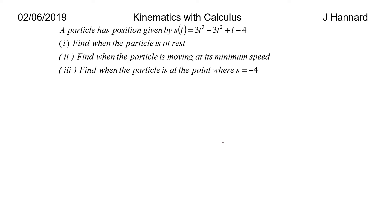Let's do another one then. A particle has a position given by s(t) = 3t³ - 3t² + t - 4. Find when the particle is at rest. So this is a little bit more tricky. We need to find when v = 0. Therefore, we need a formula for v. So we're going to have to differentiate this first and we get 9t² - 6t + 1. Then we set that equal to 0 because we want it to be at rest. And then we factorise and we get t = 1/3. There you go, easy peasy.